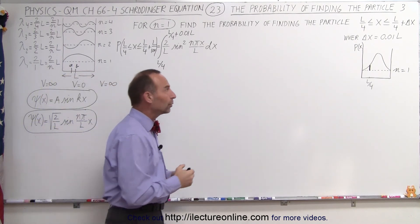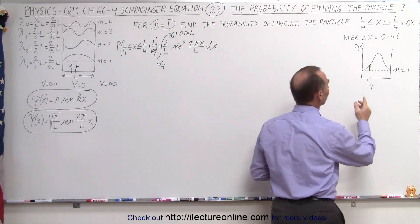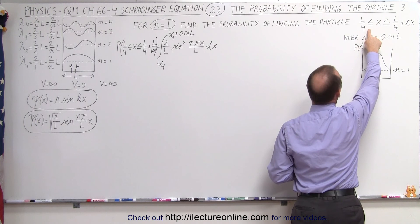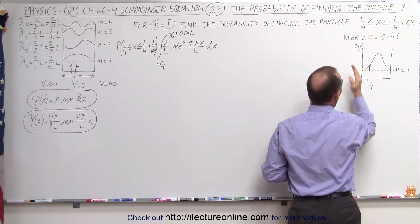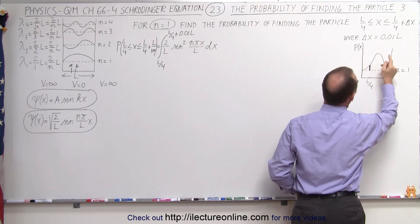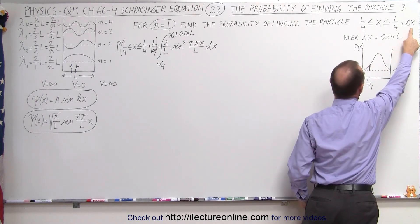To do that, we're going to define the region where we're going to look for the probability. It's going to be between the point x equals L over 4, one quarter the distance from one end to the other end of the well, and a very small distance farther, a small delta x farther.